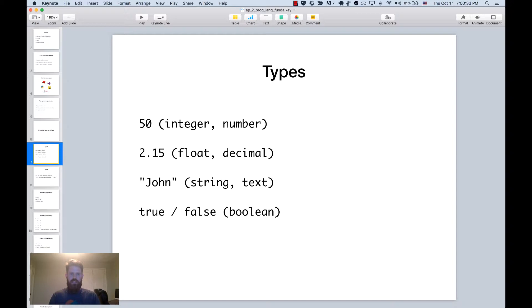And so most languages generally have these kind of basic types. So you'll have something for integers and numbers, or sometimes it's called numbers. So for example, 50. You'll have something that can handle floating point numbers. So like 2.15. In some languages, that's considered a float. In others, that's maybe called a decimal. You'll also have something to deal with text, commonly called strings. So John, in quotes, represents a string. And then you'll have something to represent true and false, which we'll look at in much more detail in the next episode. But those are generally called booleans.